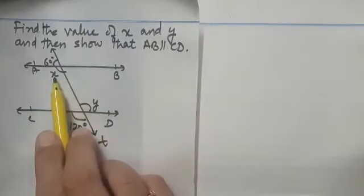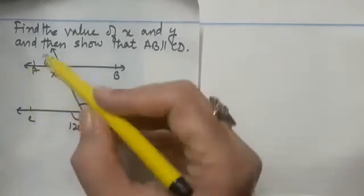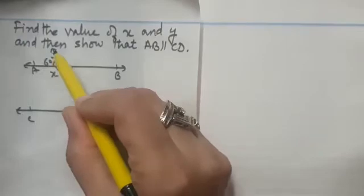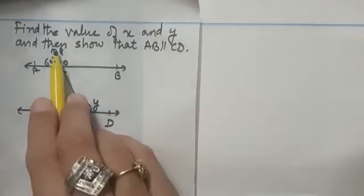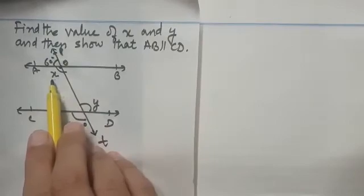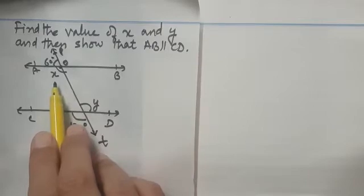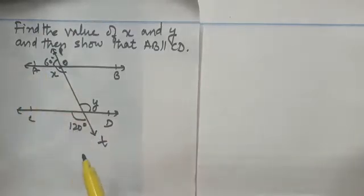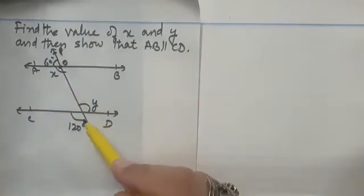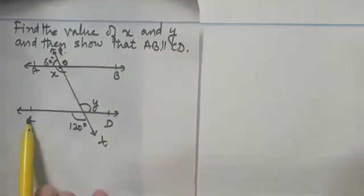X is making a linear pair with angle AOP. So what can we say about x? X plus 60 will be equal to 180 degrees.